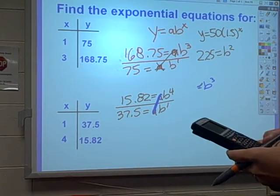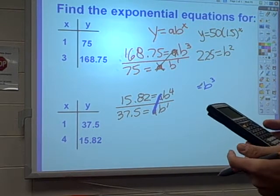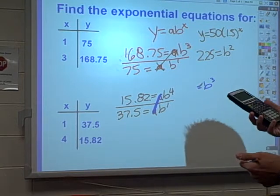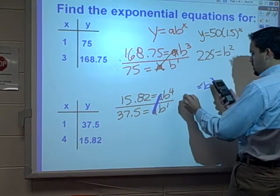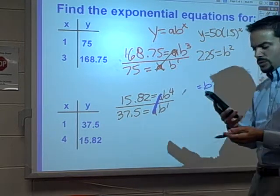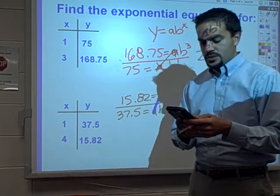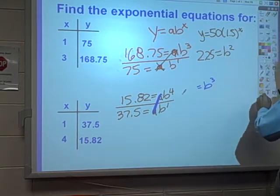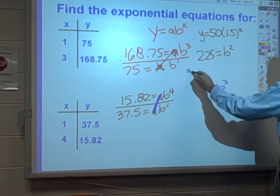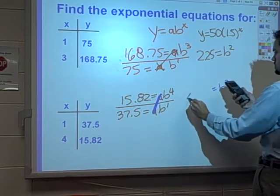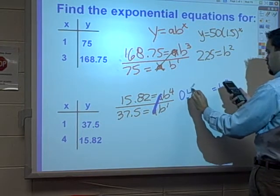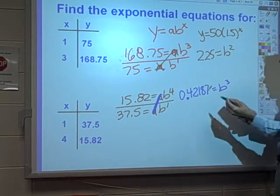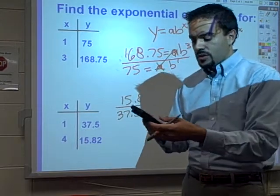15.82 divided by 37.5, which I get to be about 0.421866666, so that's repeating. So I'm going to put that in here. 0.4218, and I'll just round it to 7.